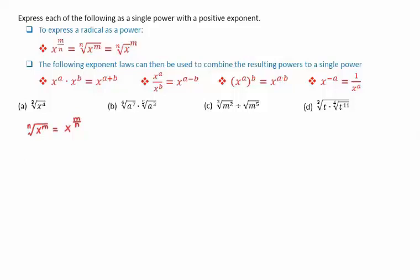For the first question, we have the cube root of x to the 4. Note how similar this is to the nth root of x to the m. We can then say in this case that m is equal to 4 and n is equal to 3. We then have a result for the cube root of x to the 4 as x to the 4 over 3.